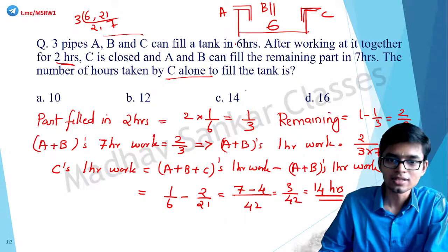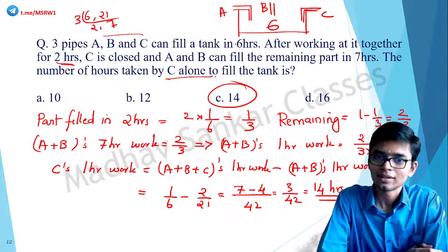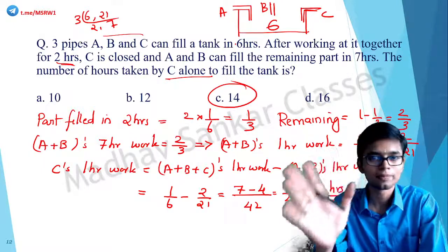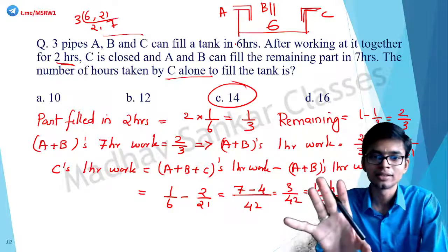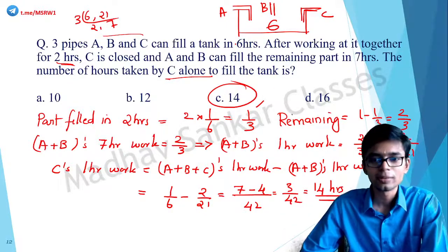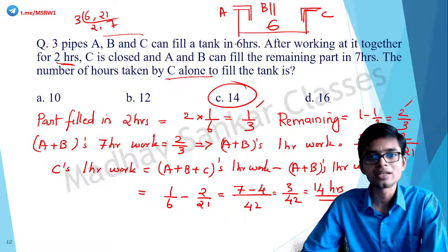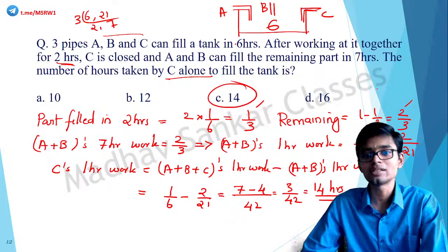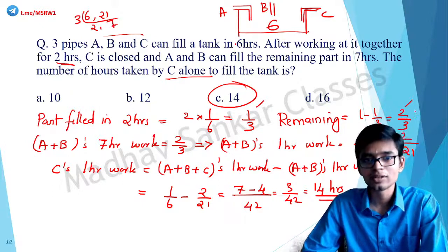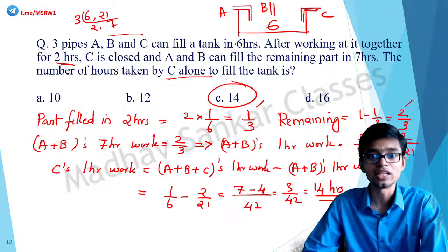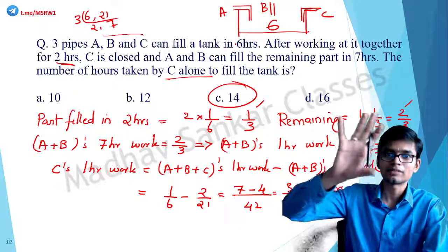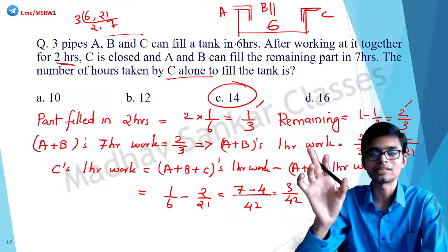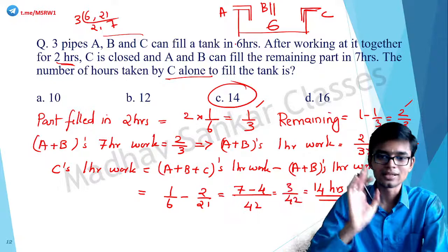Very logical: all three open for 2 hours fills 1/3, remaining is 2/3. A and B together fill the remaining in 7 hours, giving their one-hour work as 2/21. Subtract A+B's work from A+B+C's work to get C's work alone, which gives 14 hours.